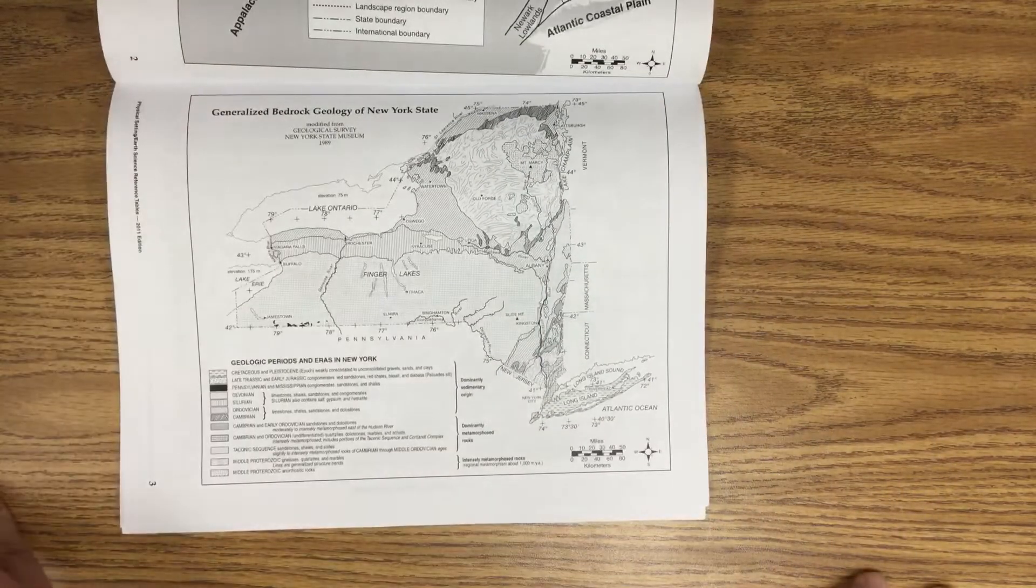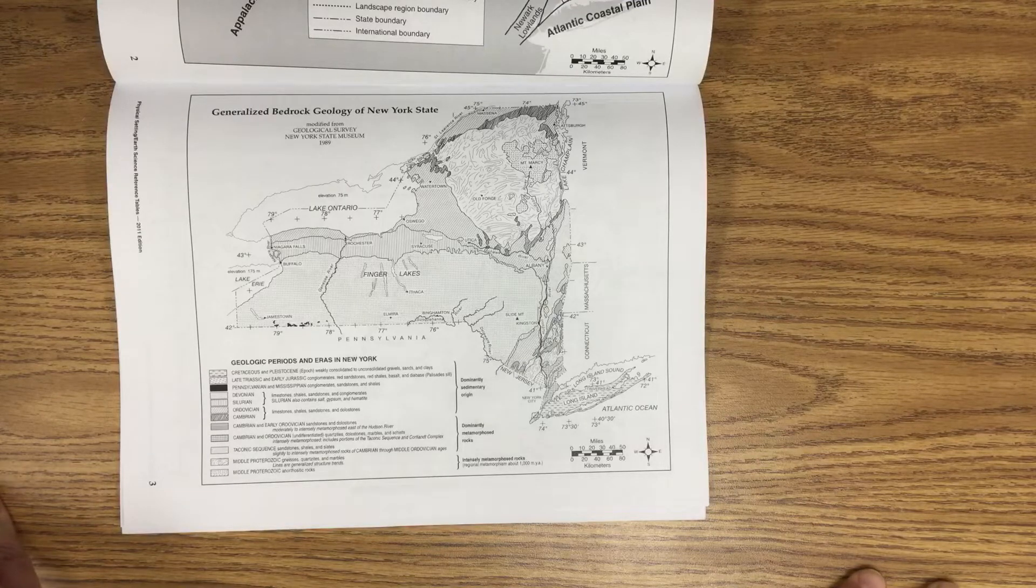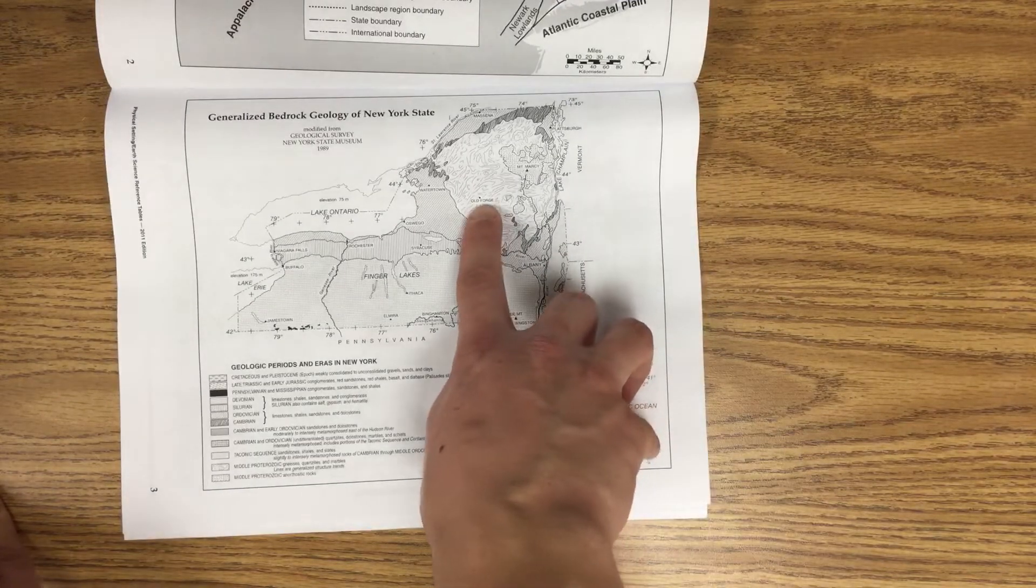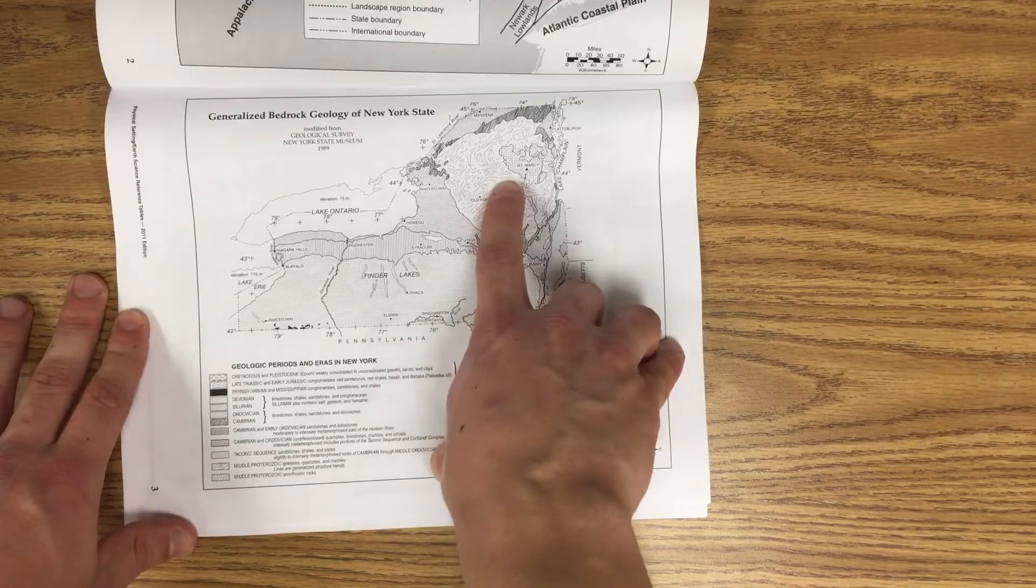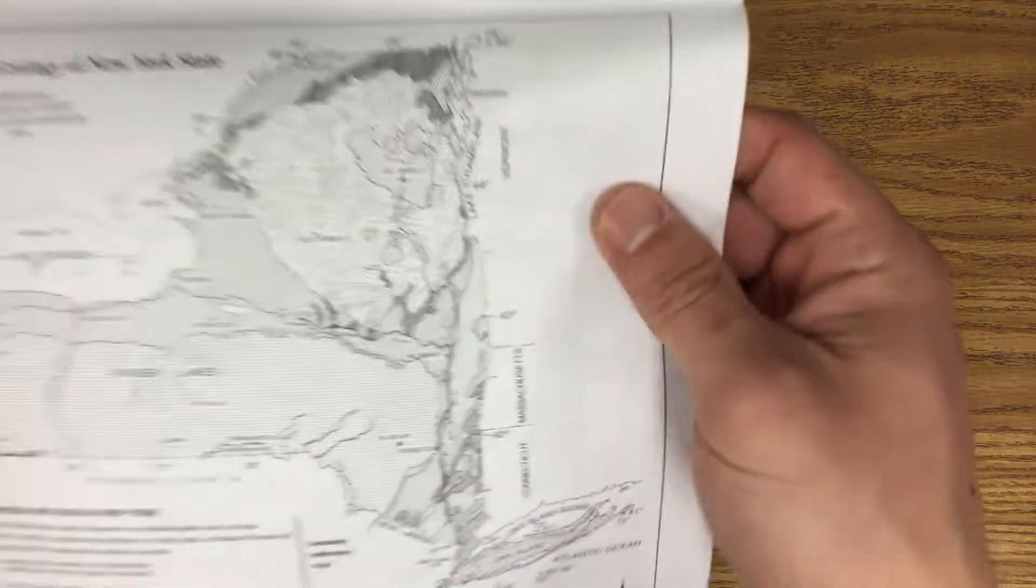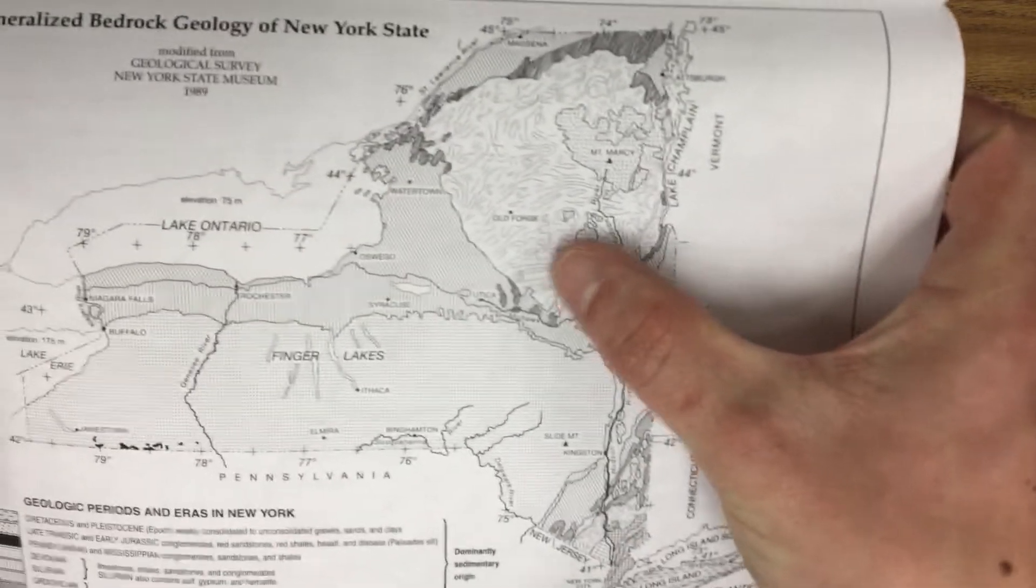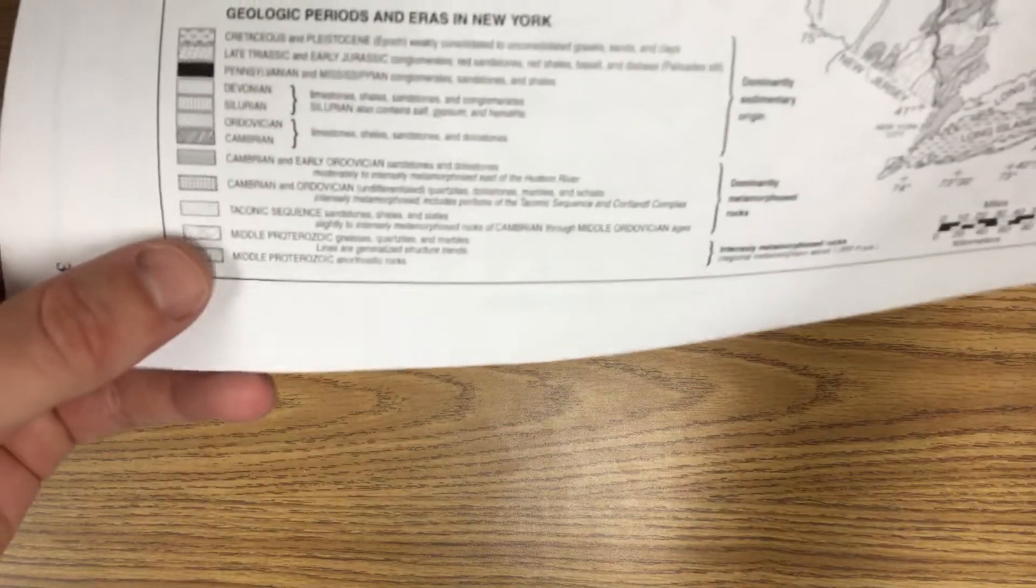It'll probably ask you, like, what geologic period did old forge rocks form in? You have to look at those symbols there. So it looks like that little squiggliness. And then I find the symbol here, it says Middle Proterozoic, that's the geologic period.